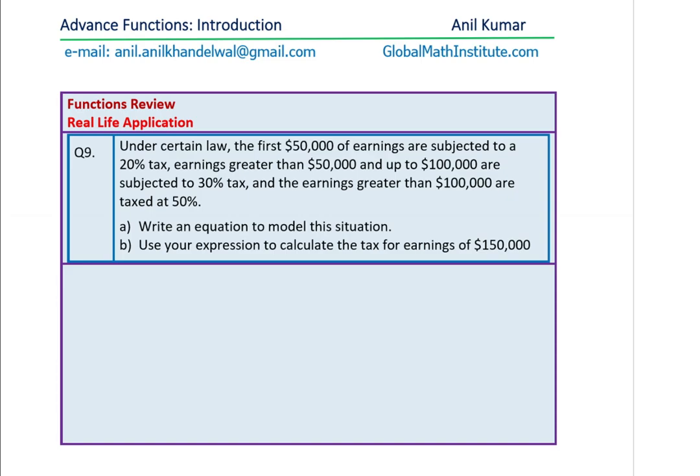Question nine, under certain law, the first $50,000 of earnings are subjected to a 20% tax. Earnings greater than $50,000 and up to $100,000 are subjected to 30% tax and the earnings greater than $100,000 are taxed at 50%. Write an equation to model this situation. Use your expression to calculate the tax for earnings of $150,000. Very interesting question based on real life situation where we are going to use piecewise functions and also figure out the domain range of this particular piecewise function. You could always extend these questions for further learning. Feel free to send an email to my address to explore and learn more.